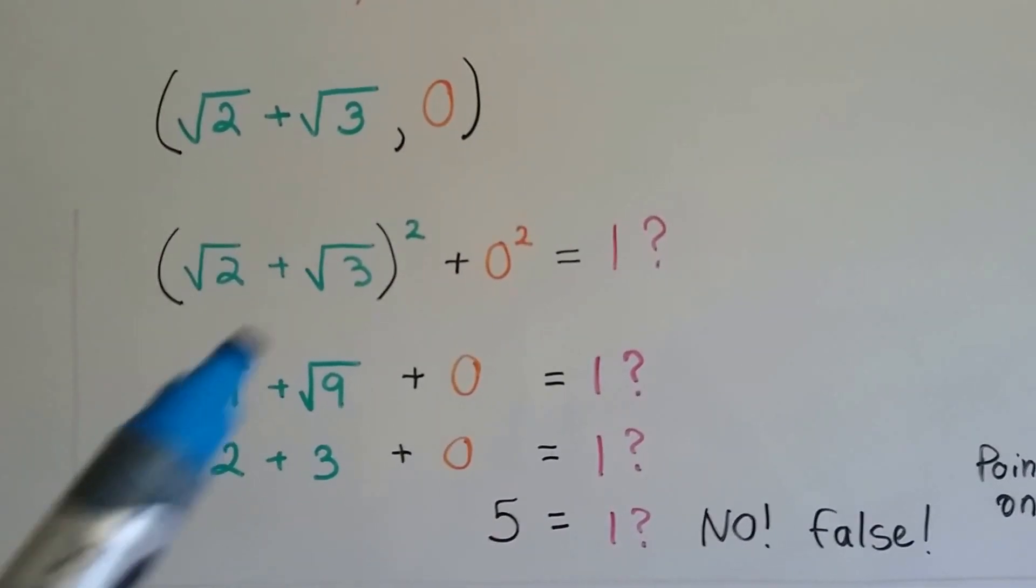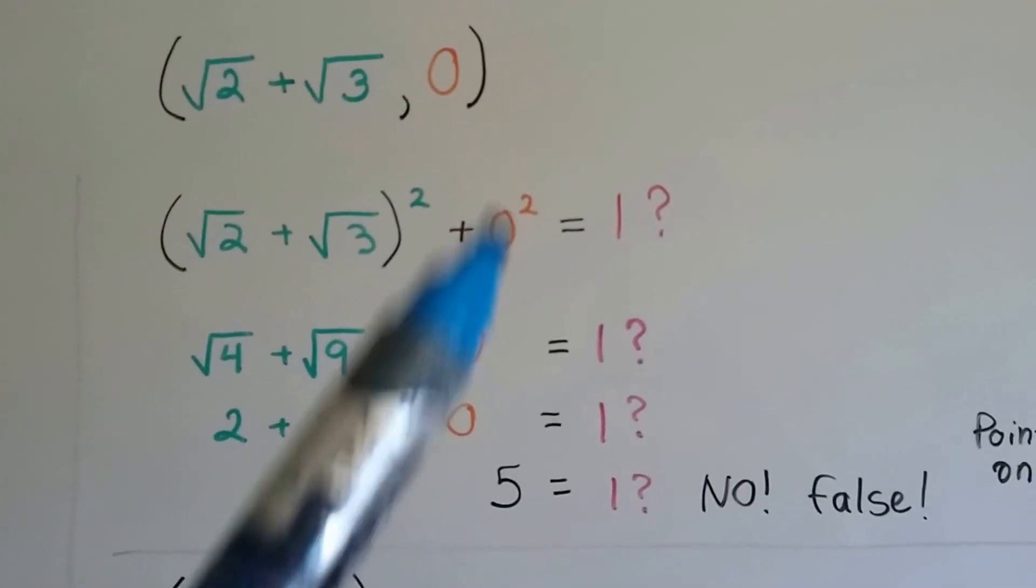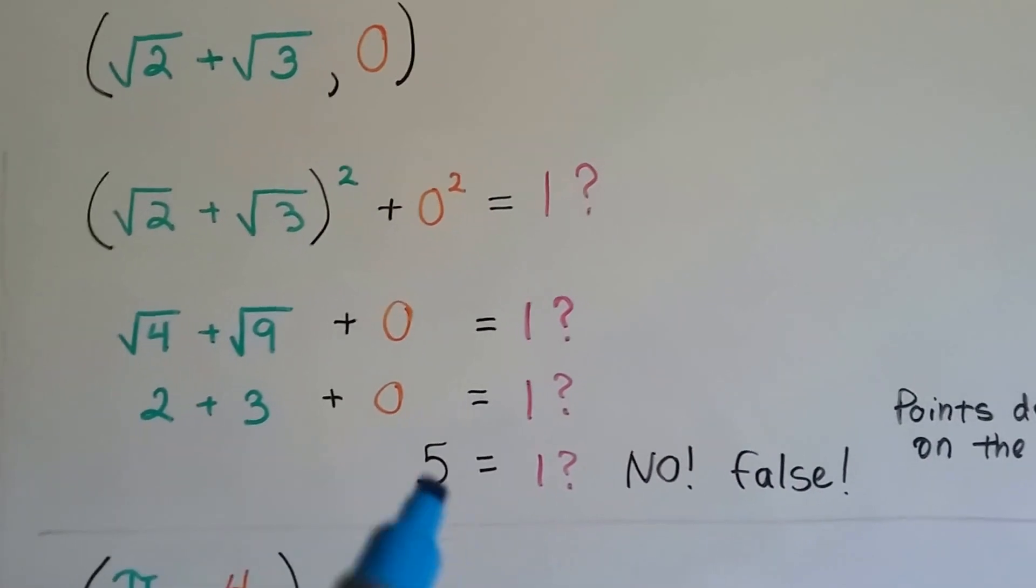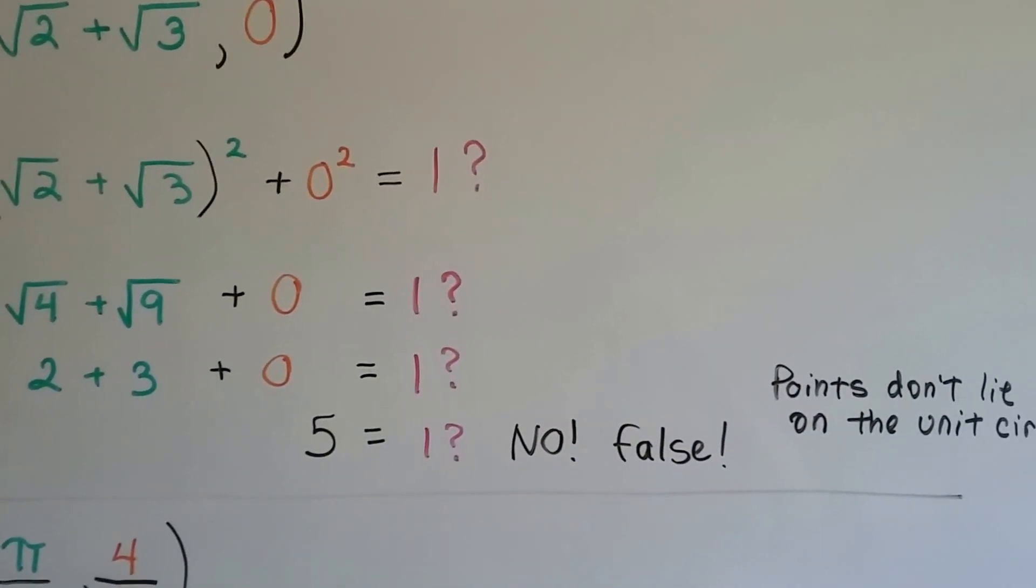When we see this, we can just take the radical signs off and get rid of the exponent. So we've got 2 plus 3 plus 0. Does that equal 1? No, that's a 5. So that's false. These points do not lie on the unit circle.